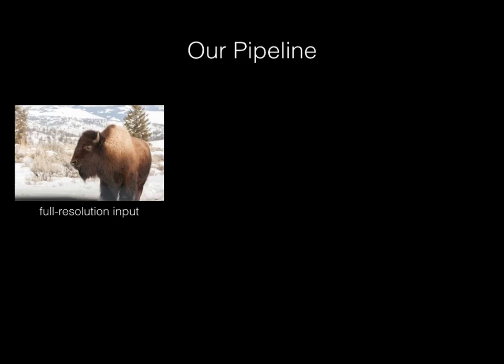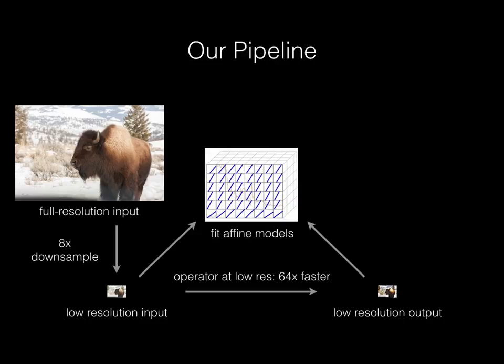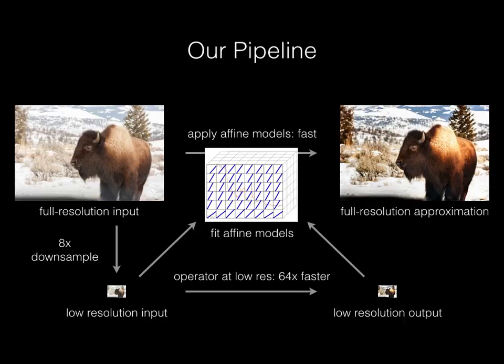To recap, we accelerate an arbitrary imaging operator by taking the input image, downsampling it by, say, 8x, running the operator—which should be 64 times faster—fitting a 3D grid of affine models, and finally applying the models to the full resolution input.